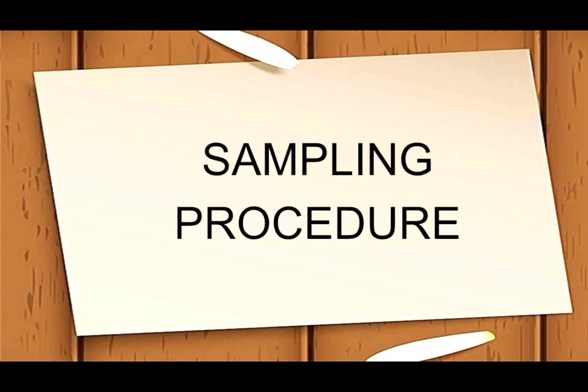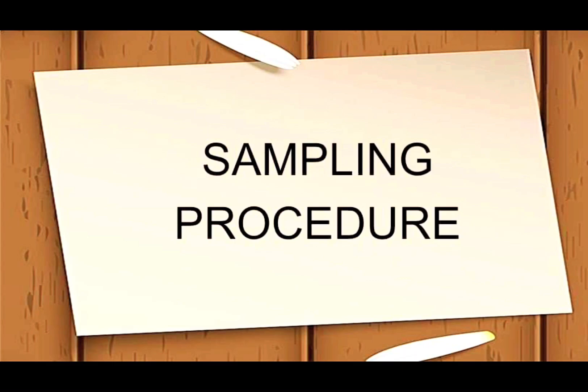Now let's discuss sampling procedure. Even with a narrowly defined population, collecting data from every individual is difficult. Instead, you will gather information from a sample. There are two basic methods for selecting a sample: probability sampling and non-probability sampling. The sample method you select has an impact on how confidently you can generalize your findings to the entire population. The researcher can use a variety of sampling techniques to choose the sample group or groups for the study.